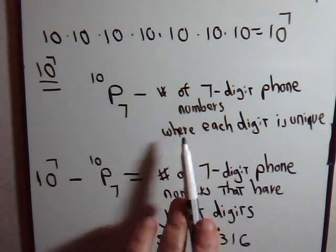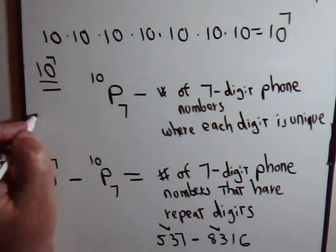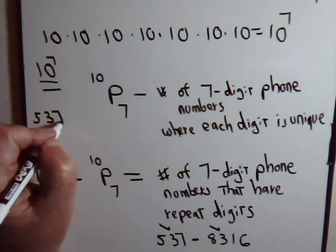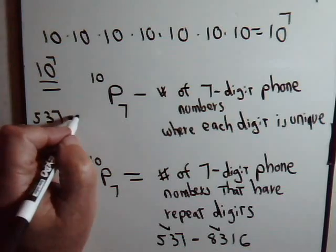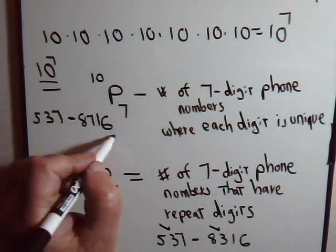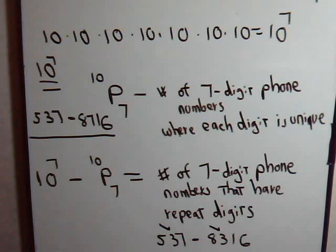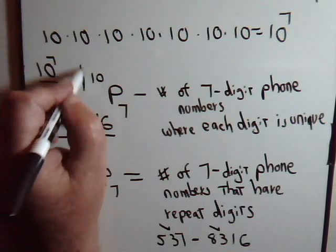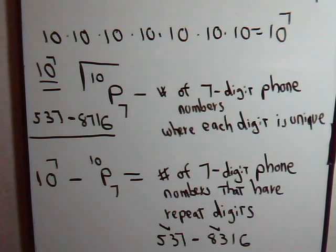But up here, this would never happen. We might have 5, 3, 7, dash, 8, 7, 1, 6. For example, there are no repeats here. And the way we get the number of unique seven digit numbers is from this formula right here.